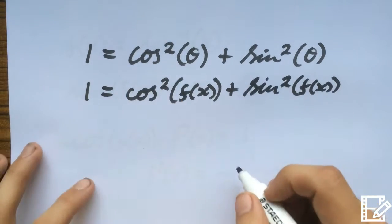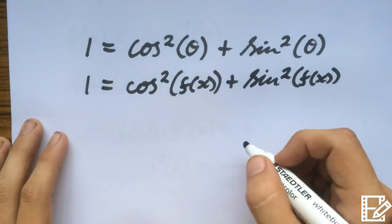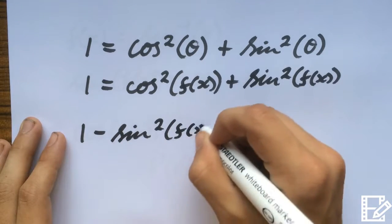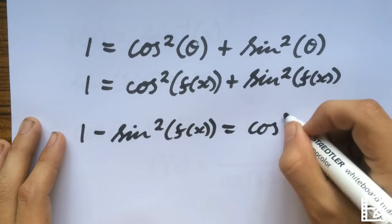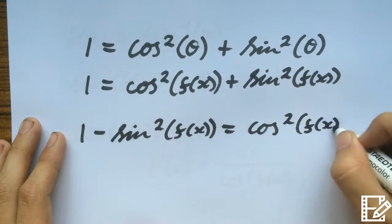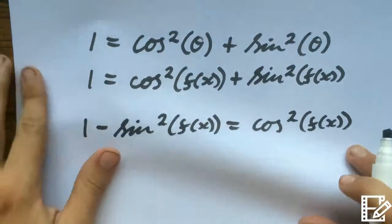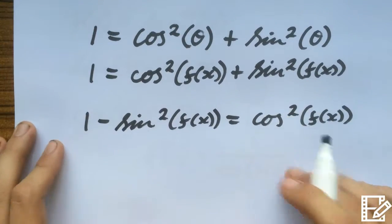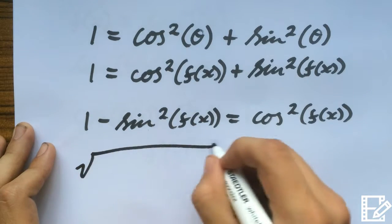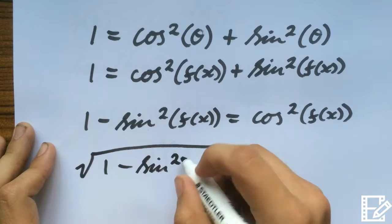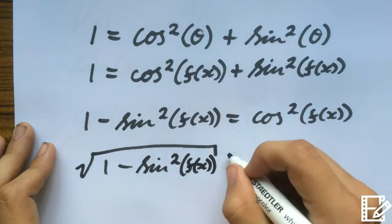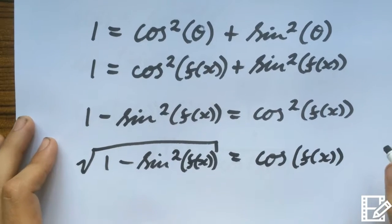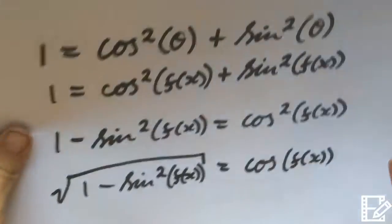We can chuck whatever we want in the brackets, as long as it's the same for both, and it'll still equal 1. Now, what I'm going to do is, I'm going to have 1 minus sin²(f(x)) equals cos²(f(x)). Now this is looking a bit familiar to this, except we need a cos(f(x)), we don't need a cos²(f(x)). So how do we get rid of the squared? Well, we square root both sides. This is good, we can work with this.